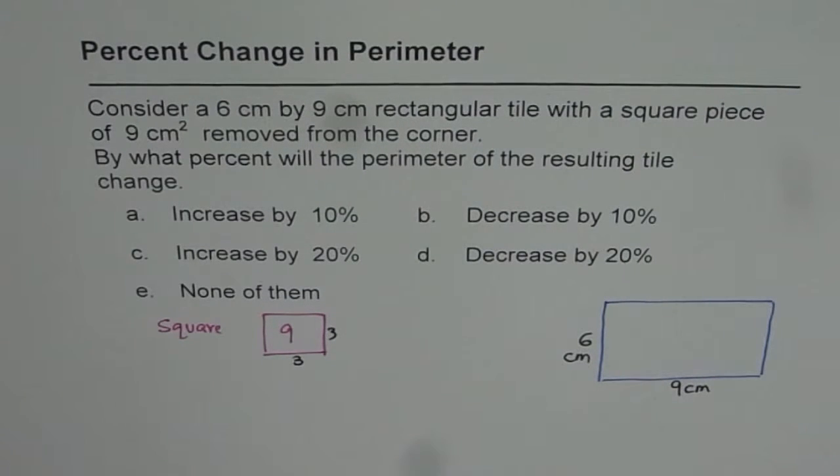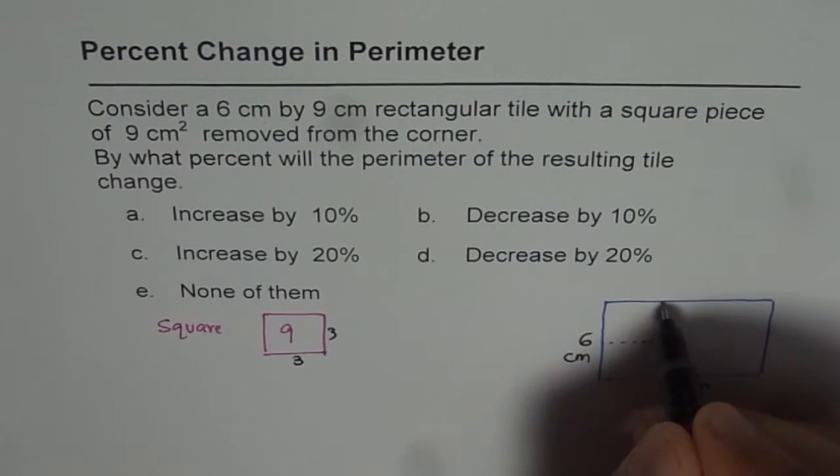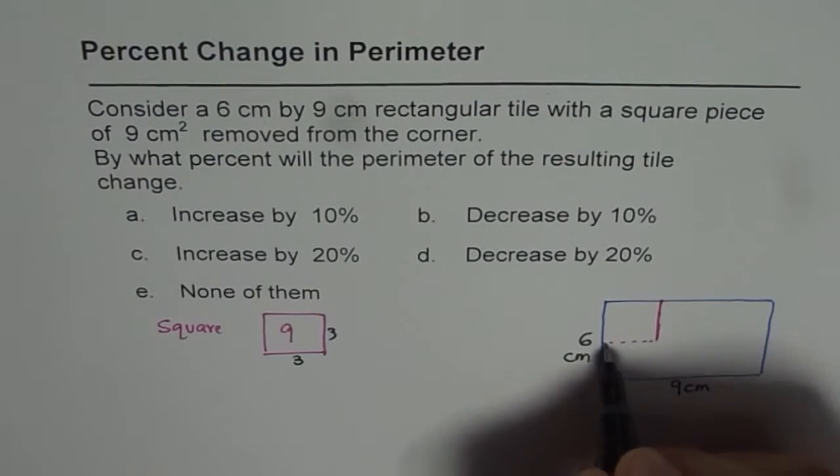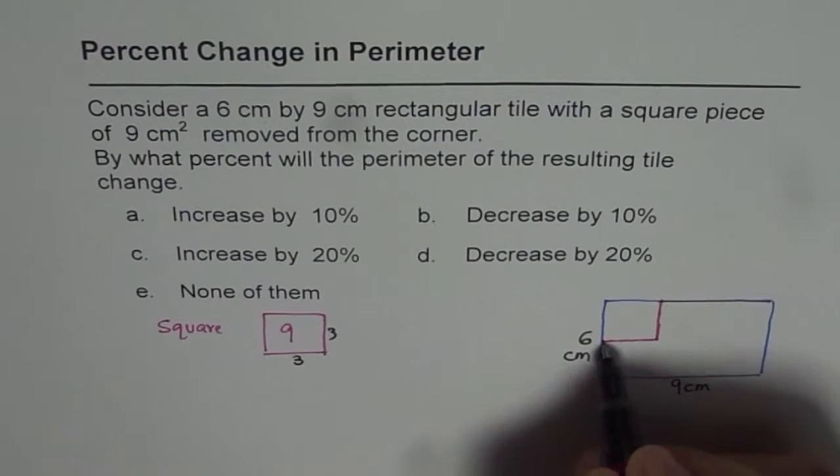So 3 is half of 6. So it is kind of like this. So that much is removed. So this is the removed portion. So we have now that remaining. Do you see that?